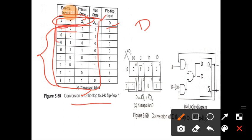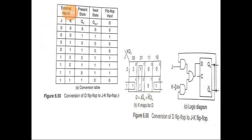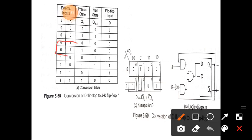If JK equals 0,0, there is a no-change condition: whatever Q_N is, Q_N+1 will be the same — if Q_N is 0, next state is 0; if Q_N is 1, next state is 1. If J and K are 0,1, K equals 1 means it is a reset condition, so the next state will be 0 regardless of the present state.